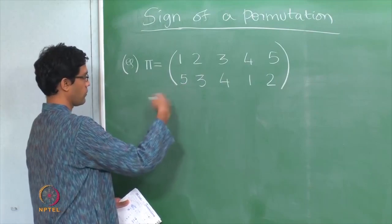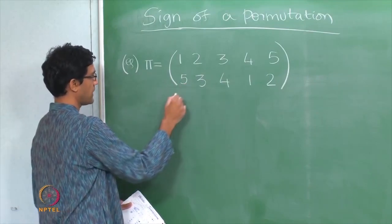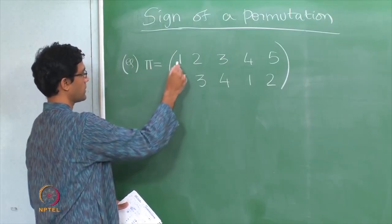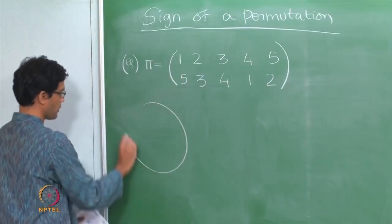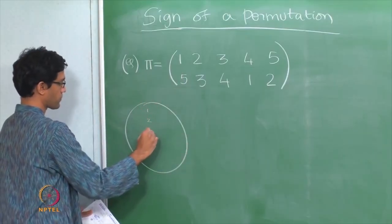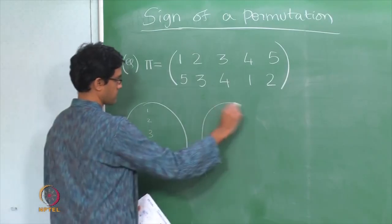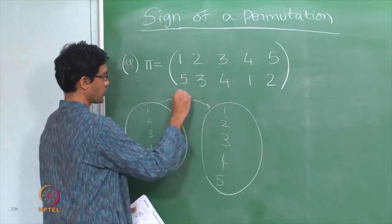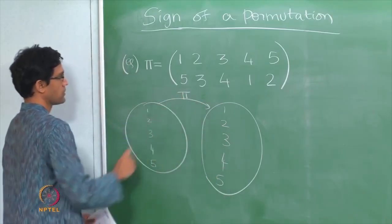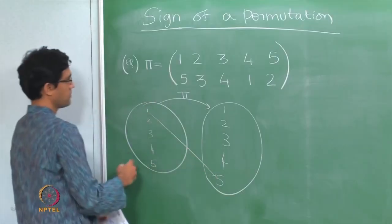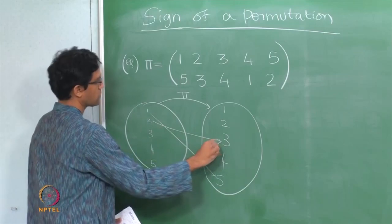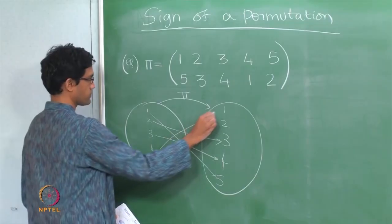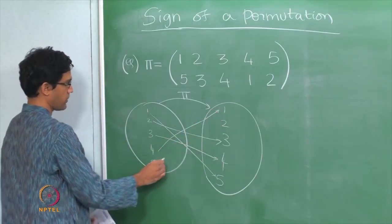We can also think of permutations as functions. Calling this permutation pi, we write pi(1) = 5, pi(2) = 3, pi(3) = 4, pi(4) = 1, and pi(5) = 2. This function is denoted by the same letter pi.